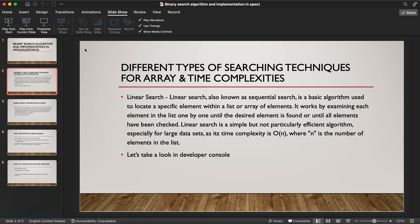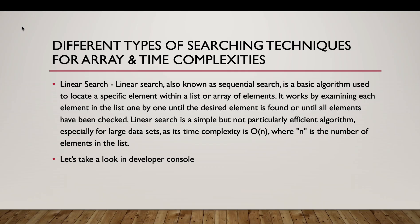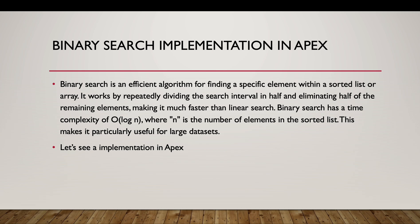Now let's talk about the binary search algorithm and how it is more efficient. The precondition for binary search is that the array should be sorted. Binary search is an efficient algorithm for finding a specific element within a sorted list or array. It works by dividing the search interval in half and eliminating half of its elements, making it faster than linear search. Binary search has a time complexity of O(log n), where n is the number of elements in the sorted list, making it particularly useful for large datasets.